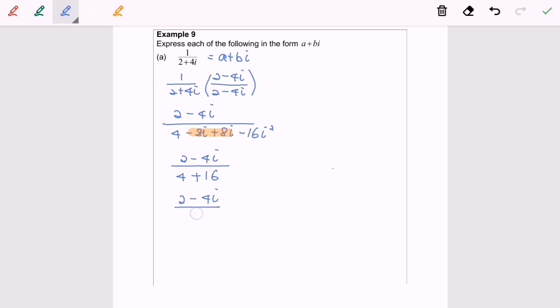The question asks us to express in the form of a plus bi, which is the real part and imaginary part. So we have to split, so we will have 1 over 10 minus i over 5, which equals a plus bi.